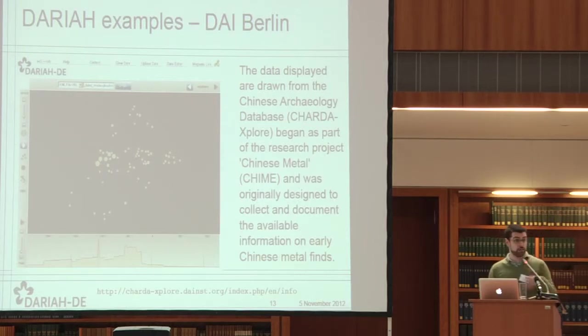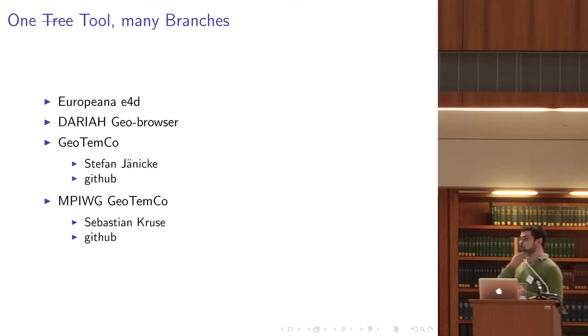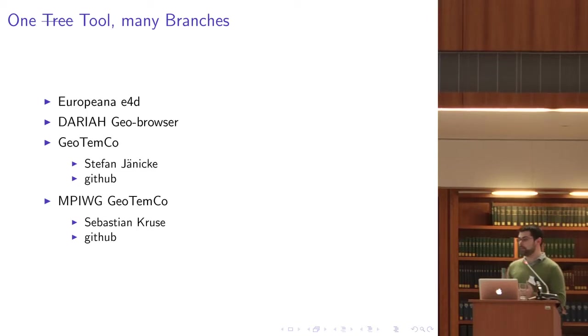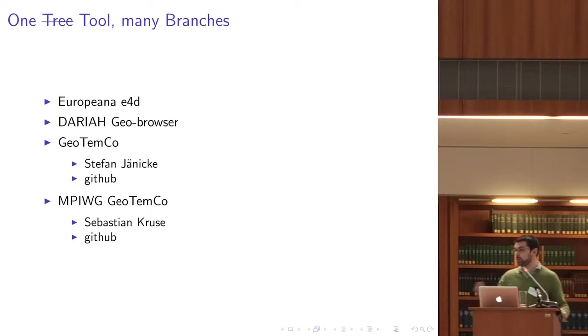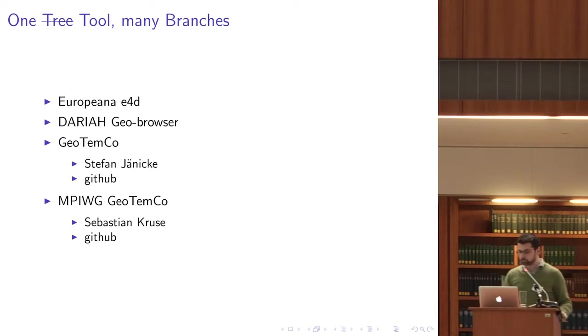For today I wanted to show something more related to the Limes, to show how the GeoBrowser can be used. The GeoBrowser is one tool but with different branches. It started in Leipzig with the European 4D, then the GeoBrowser in DREA is extending and building upon that tool. There is also the branch now called Geo Timco, still developed by Stefan Jenike in Leipzig and now also by Sebastian Kruse at the Max Planck Institute for Wissenschaftsgeschichte. It's an open source tool with code on GitHub, and these two are actually two branches of the same tool being developed by more than one partner.